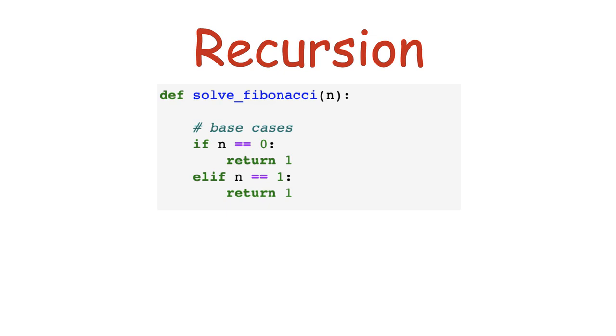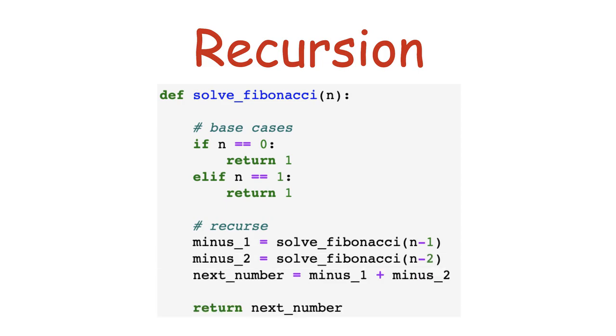But if it's not the base case, we have to solve the problem by dividing it into smaller problems. First, we apply our function to find the element with index n-1, and then to find n-2. After we have them, we simply add the results and return it.